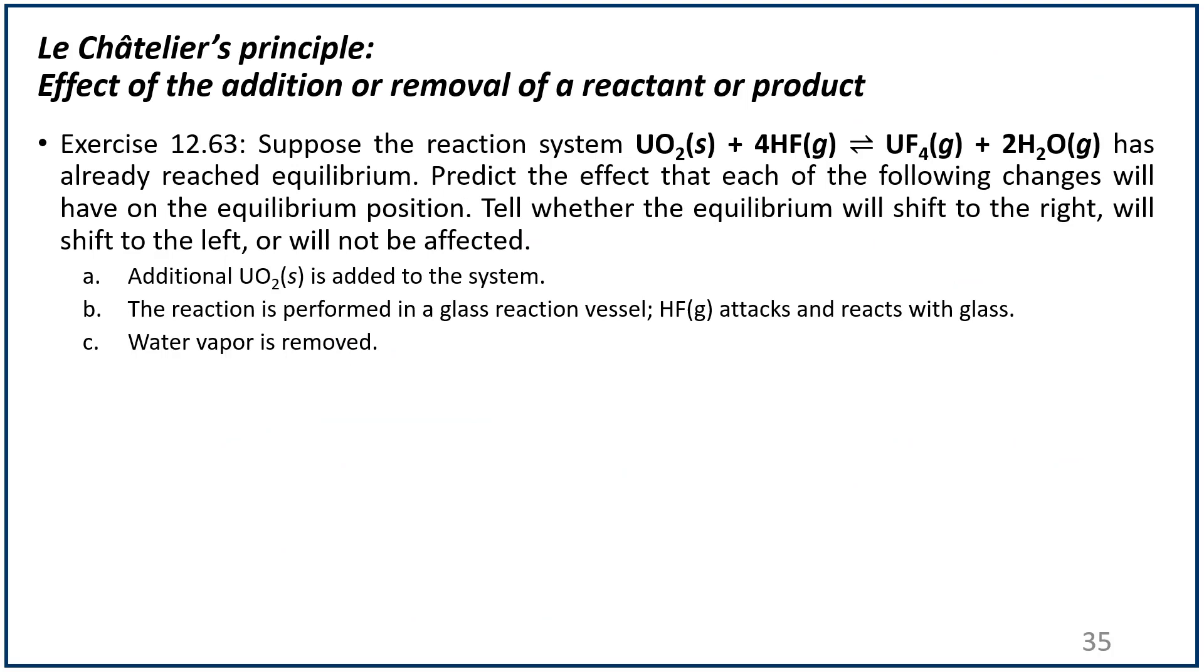Let's answer this problem. Exercise 12.63, suppose you have that reaction, and it already has reached equilibrium. You're asked to predict whether the equilibrium will tend to shift to the right, left, or nothing will happen if you add solid uranium dioxide. Uranium dioxide is in the reactant side, but notice that uranium dioxide is a solid. If you guys remember, we don't actually put the concentration of solids in the equilibrium expression.